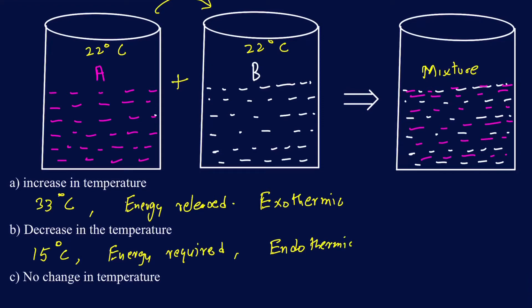Another example of an endothermic process would be a solid going to a liquid. Ice sitting on a table is not going to melt by itself unless it's gaining energy from the surroundings — that's an endothermic process. Similarly, the liquid going back to the solid is going to be an exothermic process because it releases energy. If going one way is endothermic, coming back is going to be exothermic — they go hand in hand.